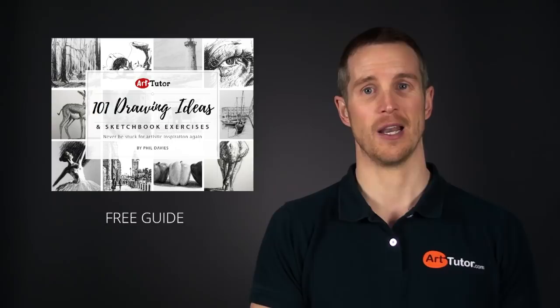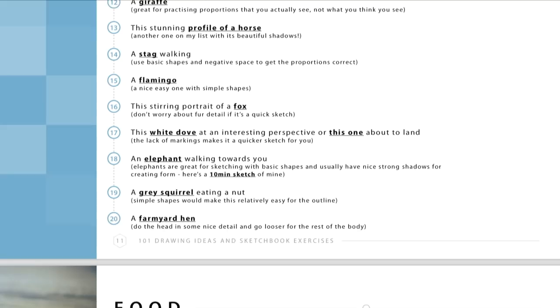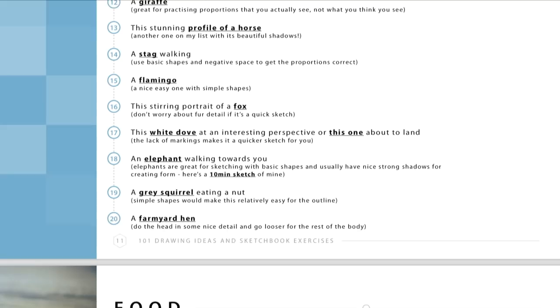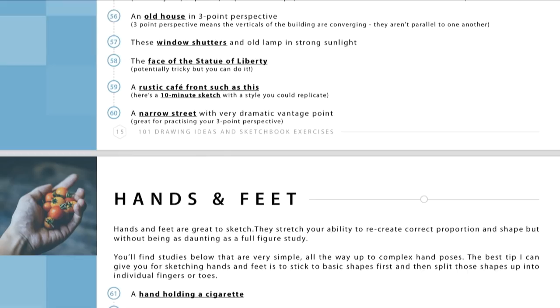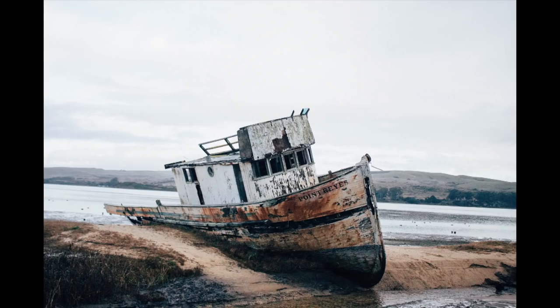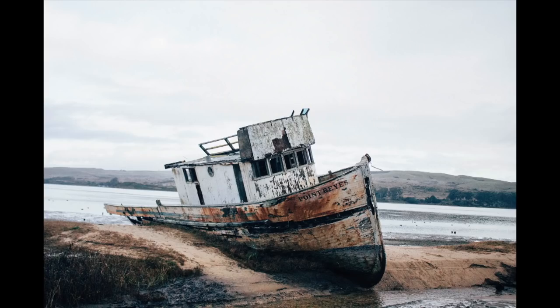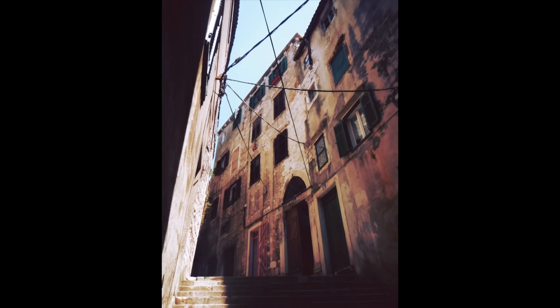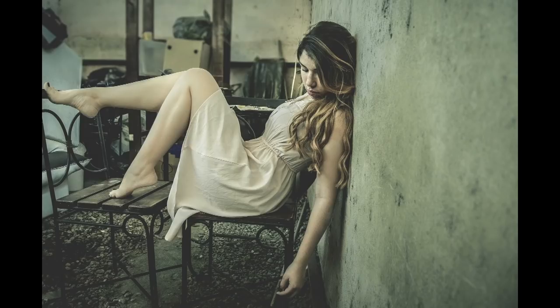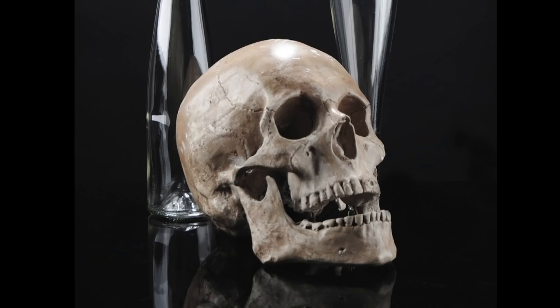The list that we've created is divided into different categories and each idea or theme comes with at least one or two copyright free reference photos. Now, these photos that we've selected have been chosen with artists in mind. For example, lots of nice strong form and cast shadows that are going to make for really interesting pieces of art. You can use the ideas and copy the photos exactly as they appear in the guide and that's a great way to practice new subjects, or you can use them for inspiration to then go and find your own version of that idea.